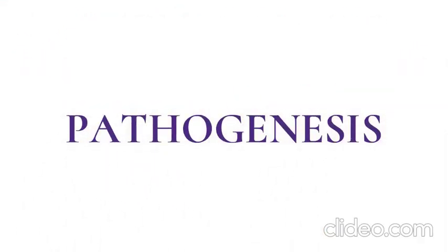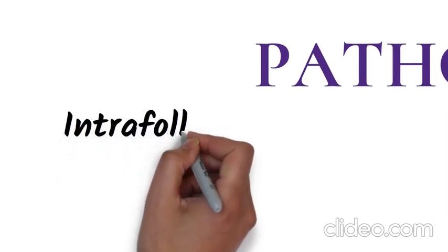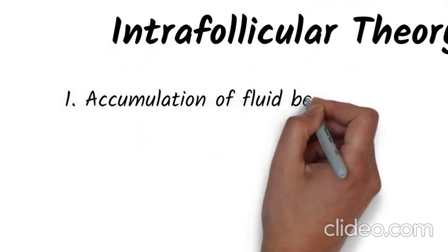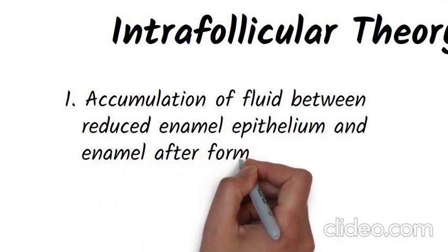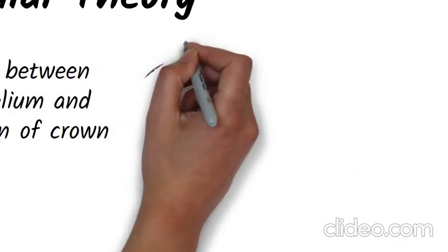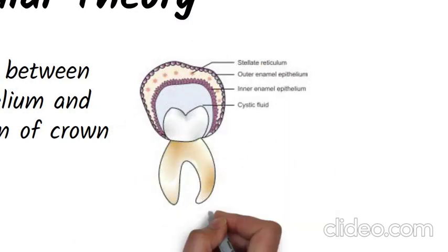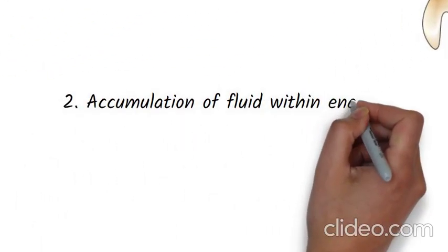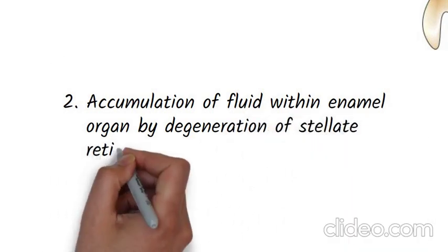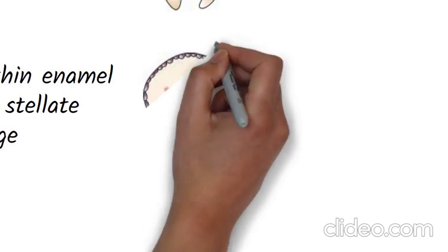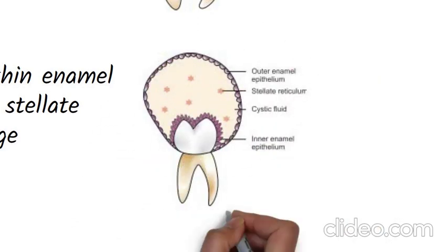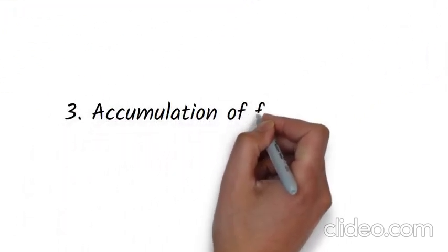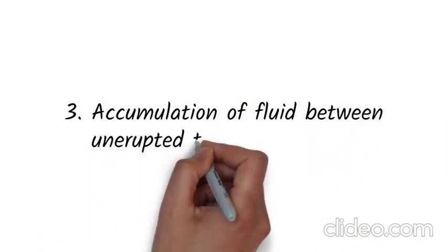Pathogenesis of Dentigerous cyst. Under the intra-follicular theory, there are three mechanisms: accumulation of fluid between the reduced enamel epithelium and enamel after crown formation; accumulation of fluid within the enamel organ by degeneration of stellate reticulum at an early stage; and accumulation of fluid between the unerupted tooth and reduced enamel epithelium.